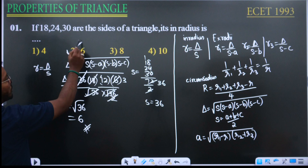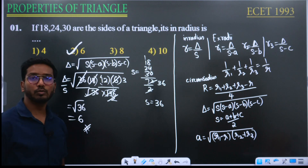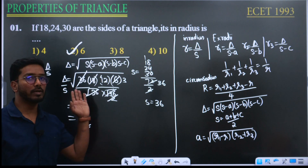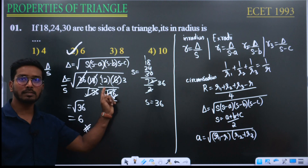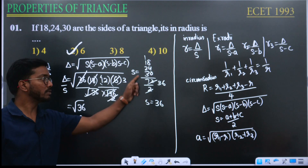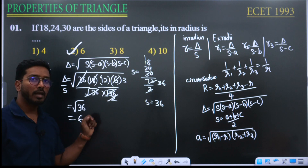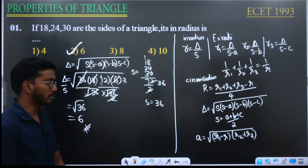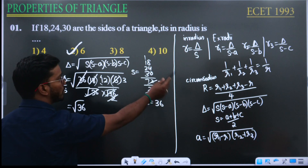With this problem we have learned two formulas: delta equals root of s(s minus a)(s minus b)(s minus c), where s equals (a plus b plus c) divided by 2, and in-radius r equals delta by s. The correct answer is 6. Try to memorize all these formulas.